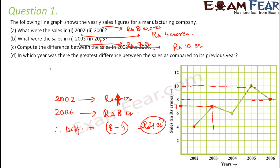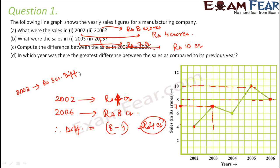In which year was there the greatest difference between the sales compared to its previous year? We need the year where this difference is maximum. For 2002, the previous year's data is not given, so it cannot be the answer. For 2003, sales were 7 crores and in 2002 they were 4 crores, giving a difference of 3 crores.